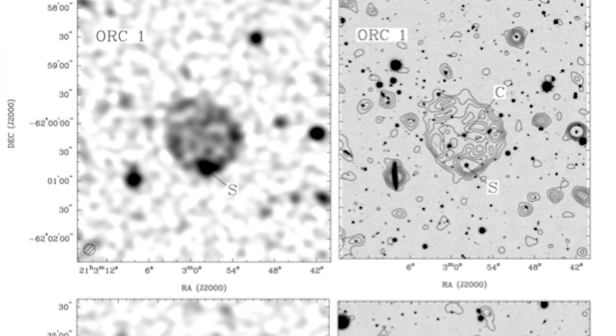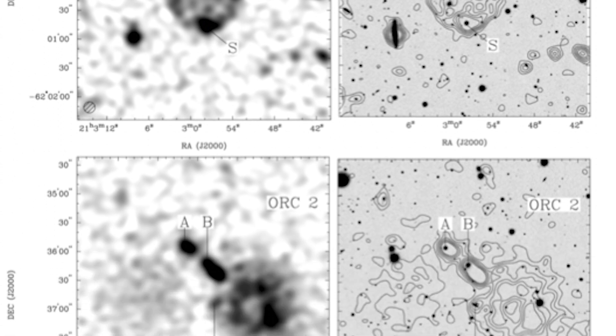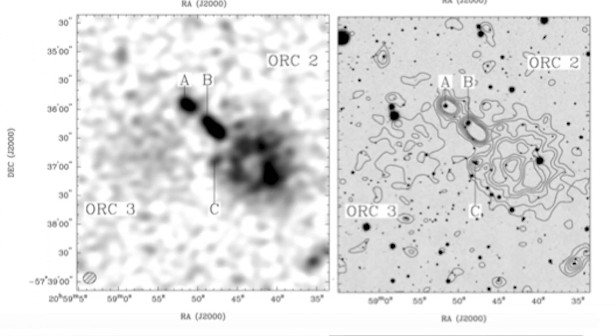And they still are. They've extensively ruled out equipment malfunction, and no natural explanation makes sense. Since the first discovery, four other similar objects have been found in the EMU pilot survey.